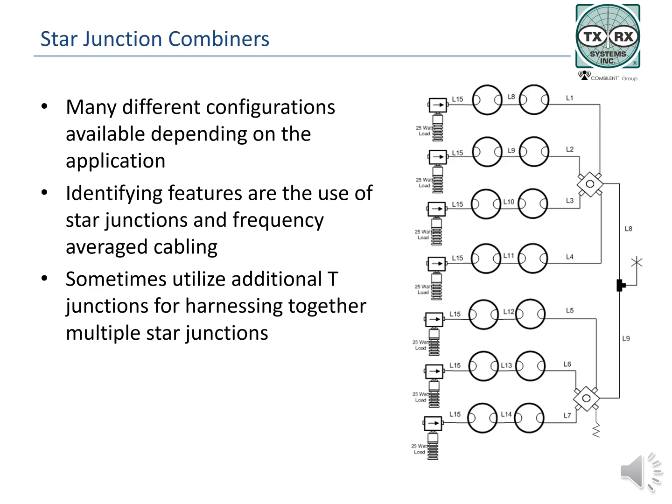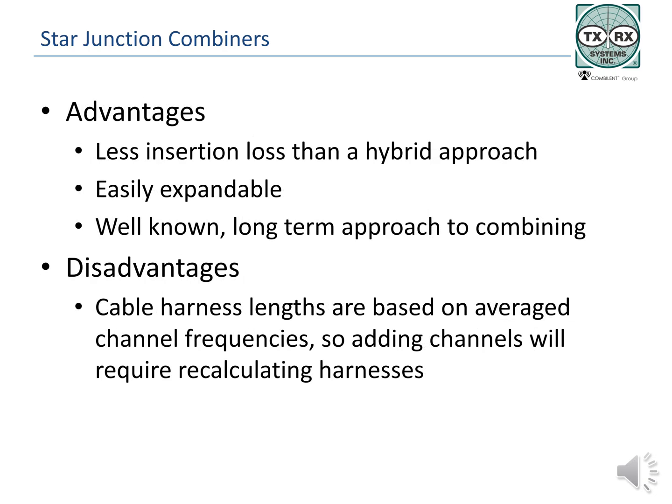Be careful not to exceed the power limits of the antennas, any connectors in the system after the star junction, or any other component in the system. When compared to hybrid combiners, the star junction has lower insertion loss per channel. Combiner losses in star junction combiners include the isolators used on each channel, filter losses, and any cable or connector losses. The loss from the star junction is either measured or calculated and added to the insertion loss budget.